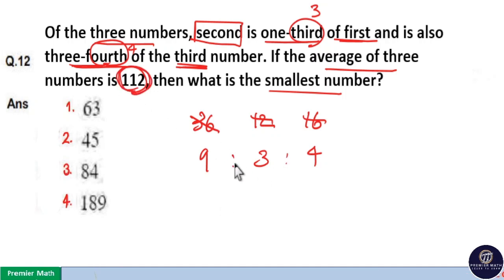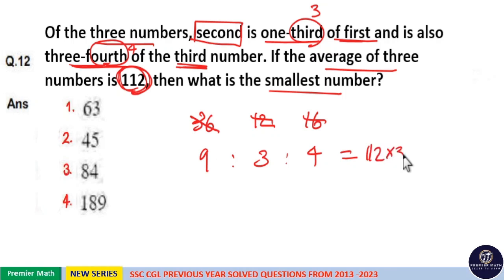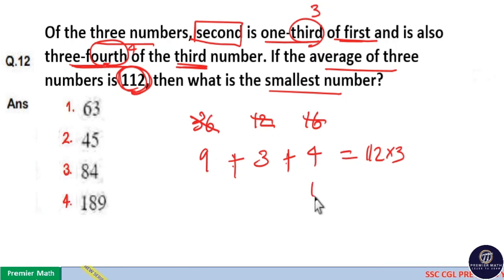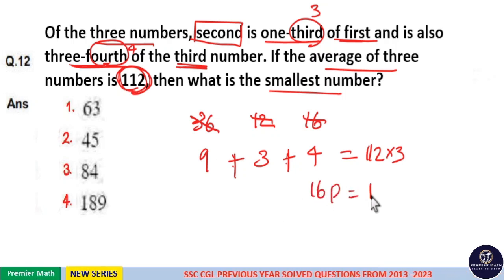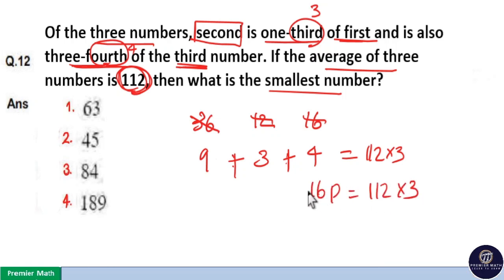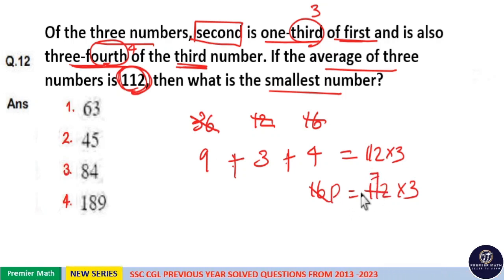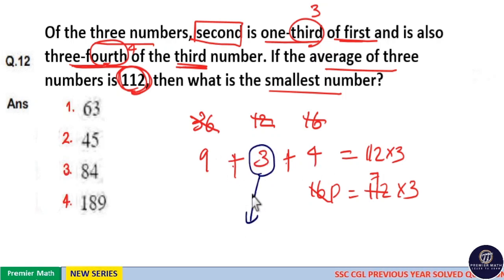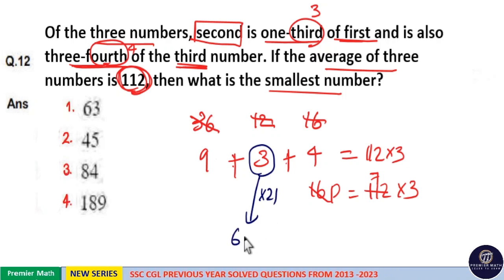Average is 112, meaning the sum of the three numbers is 112 into three. The sum of ratio parts is nine plus three plus four equals sixteen. So sixteen parts equals 112 into three, meaning sixteen goes seven times into 112, so one part equals twenty-one. We need the smallest number. The smallest is three parts, so three parts equals three into twenty-one equals sixty-three.